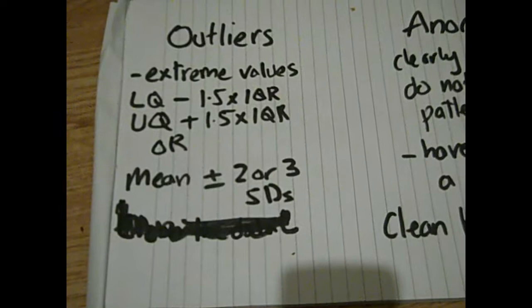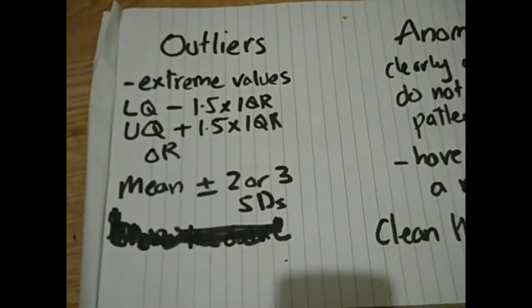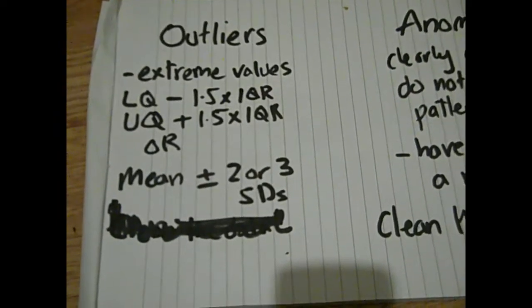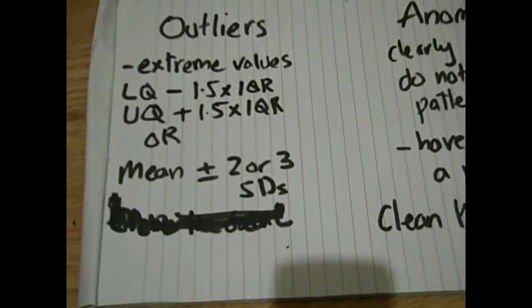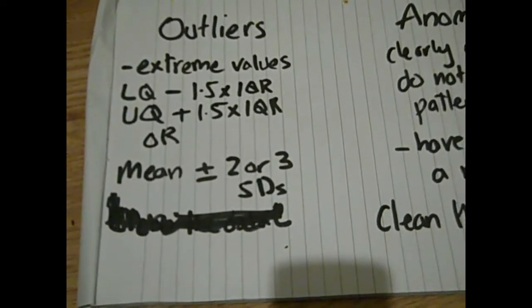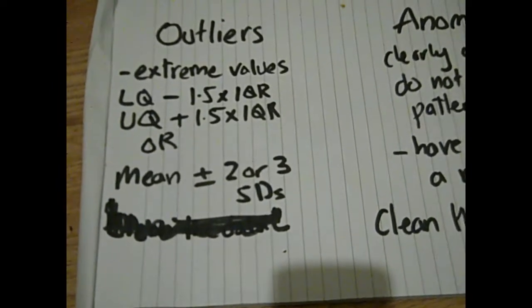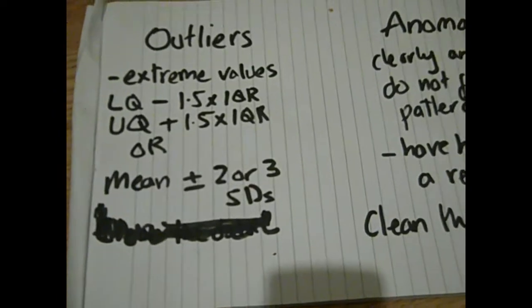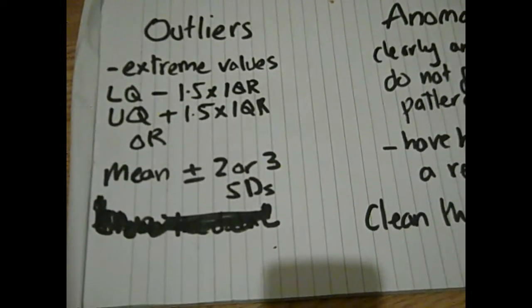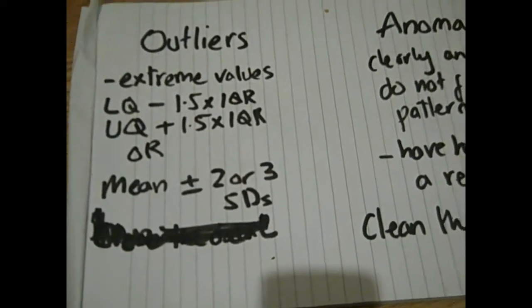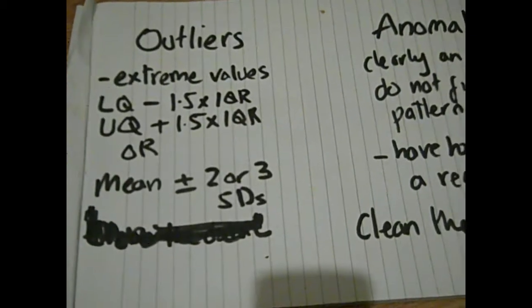So what you do is use the data that you've got, work out these things - standard deviation, quartiles, whatever - and if you're inside that range you're fine. But if you're outside the range that this calculation gives you, then you've got an outlier. An anomaly is something slightly different though.